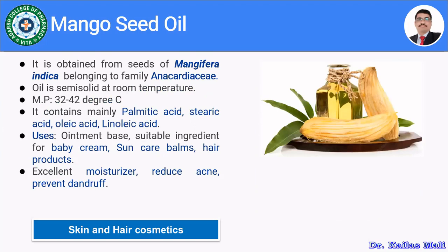The next herb is mango seed oil. It is obtained from the seeds of Mangifera indica belonging to family Anacardiaceae. The oil is semi-solid at room temperature having a melting point of 32 to 42 degrees Celsius. It contains mainly palmitic acid, stearic acid, folic acid and linoleic acid. It is used in skin cosmetics as well as hair cosmetics as an ointment base, suitable ingredient for baby creams, hair balms and hair products. It is an excellent moisturizer, reduces acne, and prevents the formation of dandruff.